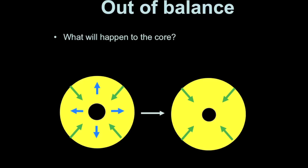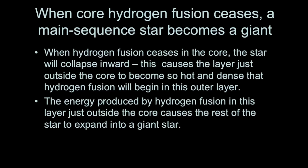The outer layers also collapse down onto the core. These outer layers are hydrogen atoms that have not yet been fusing. While the core collapses into a very dense, hot ball of helium, the outer layers compress into a dense shell just around the core. This hydrogen shell becomes so hot and dense that it begins fusing — even hotter than the original core of the main sequence star.